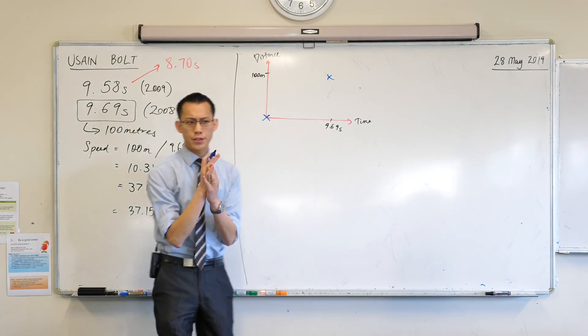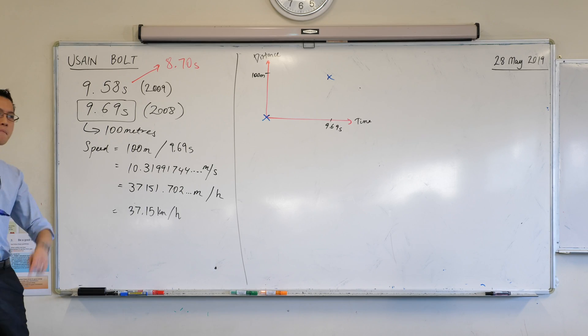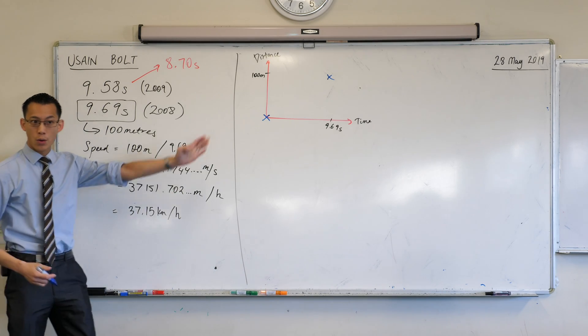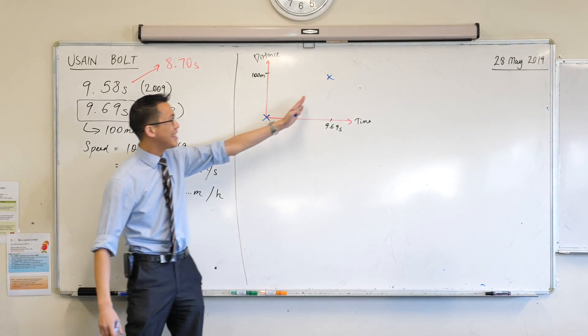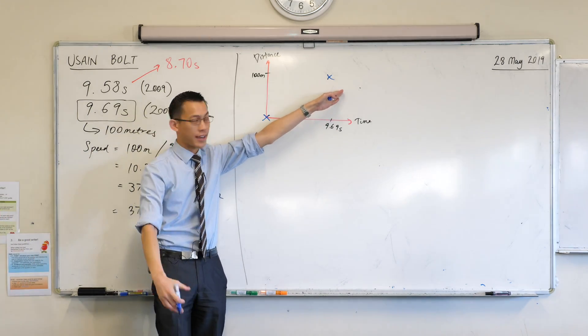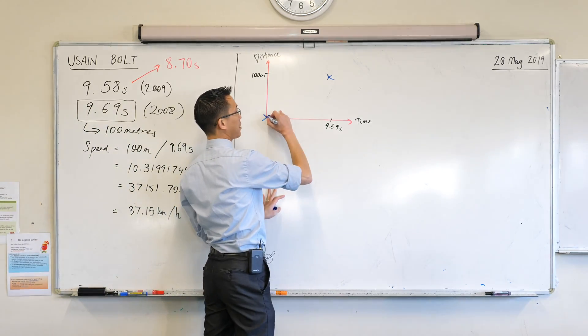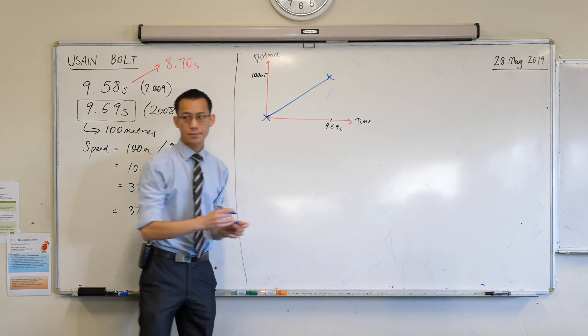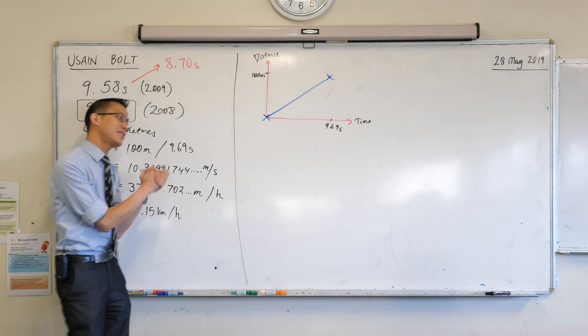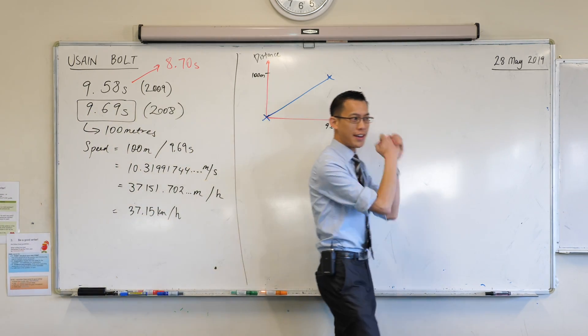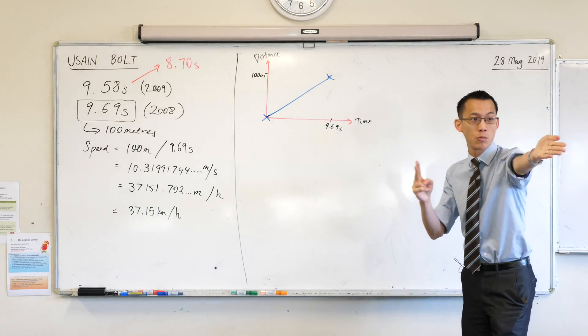Now, just look with me for a second after you've got that down at what I'm about to draw, because I want to come back to the video that you watched and pose a question about this. We know he starts time zero at the blocks, and then he ends, after 9.69 seconds, up here at 100 metres. So it's tempting to draw something like this, just a straight line from the beginning to the end. But can anyone tell me why this is not an accurate representation of what actually happened? There's at least two reasons.